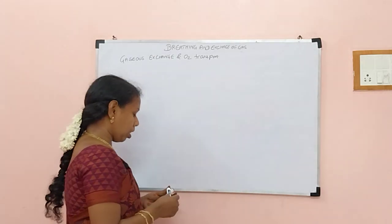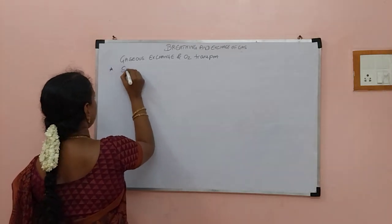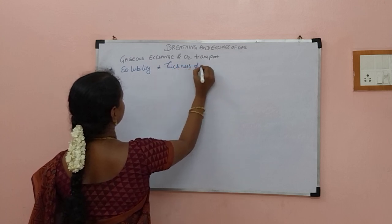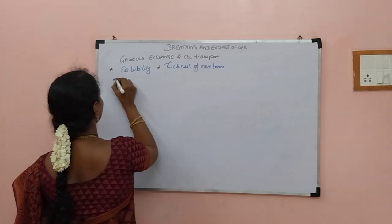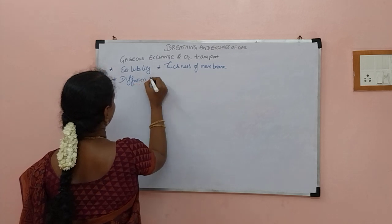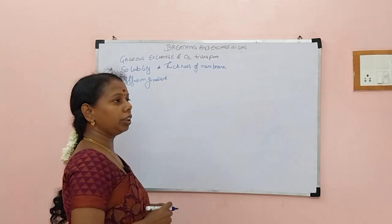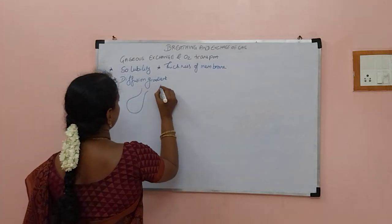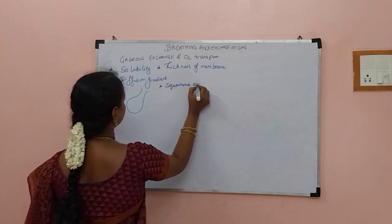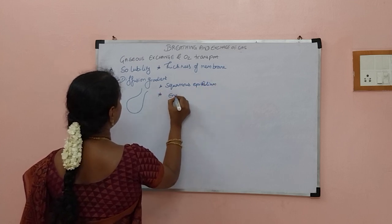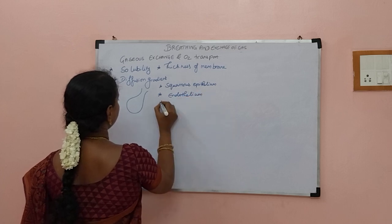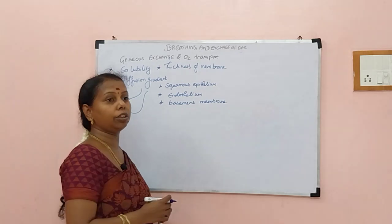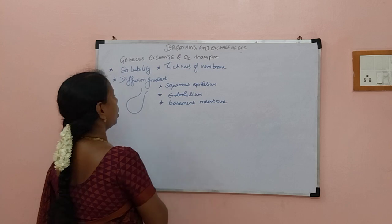Gaseous exchange mainly depends on solubility, thickness of membrane, and diffusion gradient. Air travels throughout but gets exchanged in the alveoli. In the alveoli where gas exchange happens, there is squamous epithelium. In capillaries we have endothelium, and in between we have a basement membrane. These three act as a filtering unit and diffusion agent.